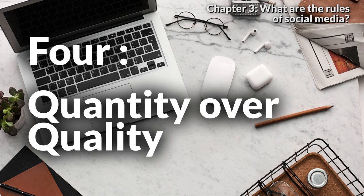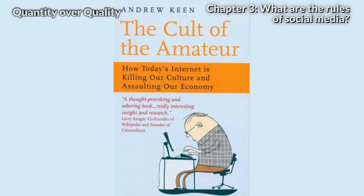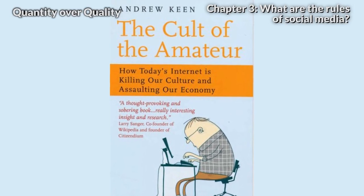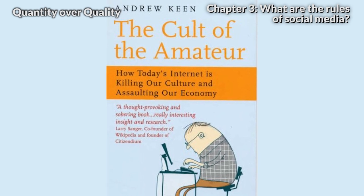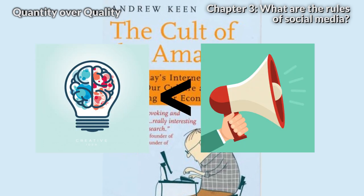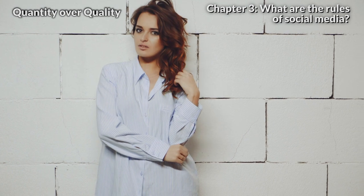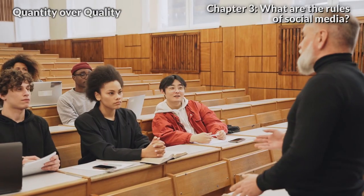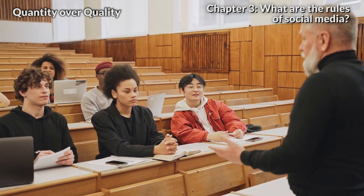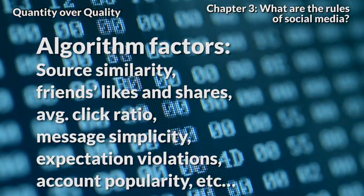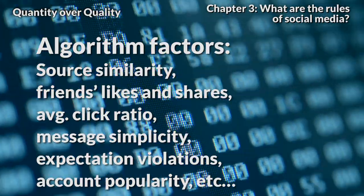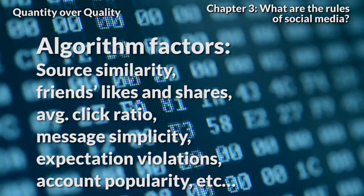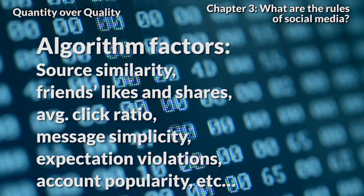Number four: quantity over quality. In the book 'The Cult of the Amateur,' Andrew Keen explains that social media favors not the smartest but the loudest voice. For example, a teenage model on Instagram can influence far more people compared to a professor at Harvard. The social media algorithms favor heavy users, anomalies, controversies, and frequent users regardless of their authority, credibility, or expertise.